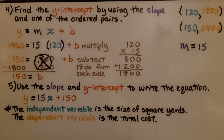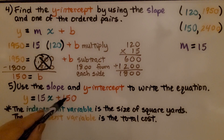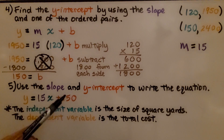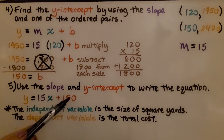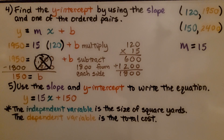We use the slope and y-intercept to write the equation: y = 15x + 150. So there must be some conditional fee — a $150 fee that has to be paid along with the price per yard. The independent variable is the size in square yards and the dependent variable is the total cost.